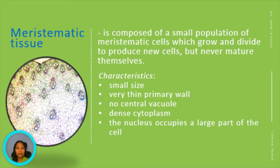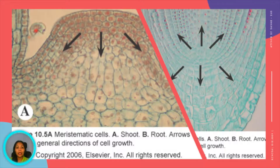These meristematic cells are small in size. They have a thin primary wall, no central vacuole with dense cytoplasm, and the nucleus occupies a large part of the cell. Plant growth only occurs at the meristematic regions, or regions that undergo active mitotic cell division. Thus, differentiation in plants happens. Differentiation refers to the processes by which distinct cell types arise from precursor cells and become differentiated from each other.